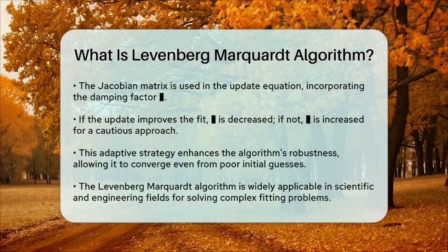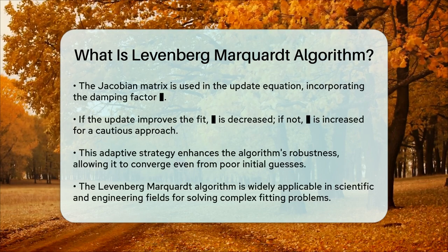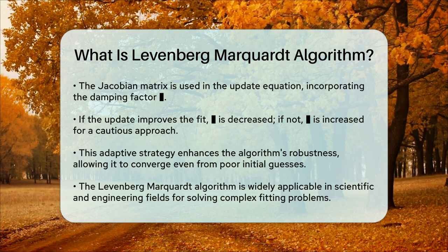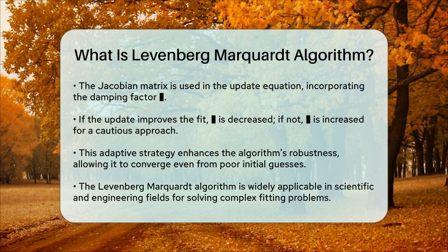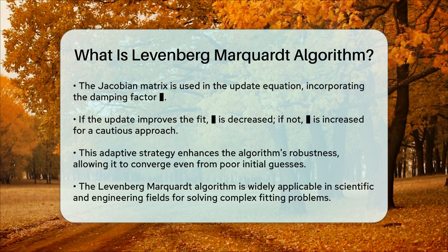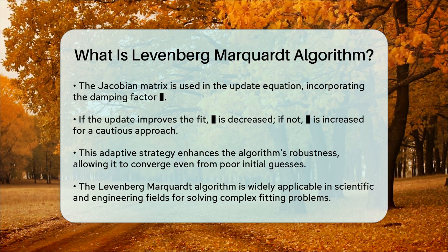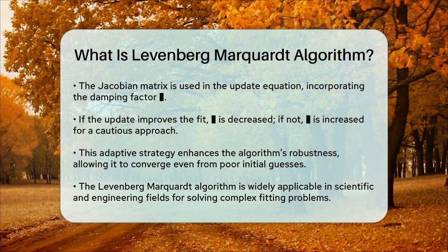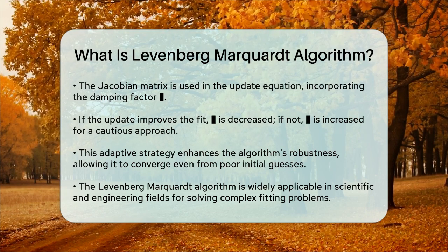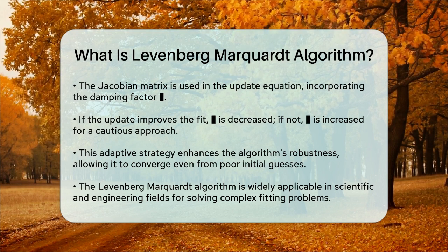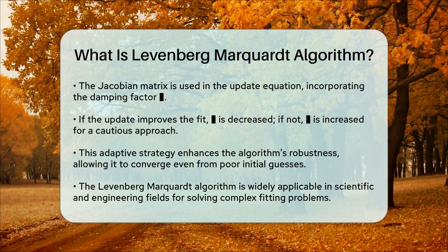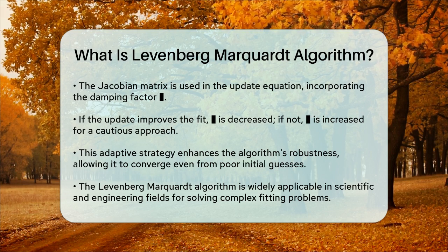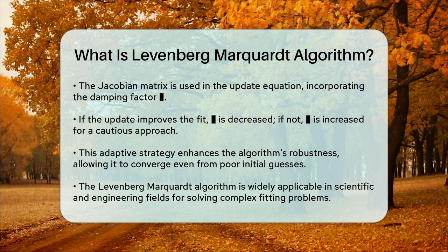If the update results in a better fit — a reduced sum of squares — you decrease lambda to move closer to the Gauss-Newton method. If the update doesn't improve the fit, you increase lambda to take a more cautious step in the gradient descent direction. This adaptive approach makes the Levenberg-Marquardt algorithm more robust than either method alone, and it can still converge to a local minimum even when the initial guess is not very good. In summary, the Levenberg-Marquardt algorithm is a versatile and efficient method for solving nonlinear least squares problems by balancing the strengths of the Gauss-Newton and gradient descent methods, making it a valuable tool in many scientific and engineering applications.